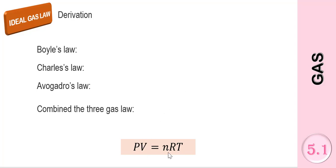The derivation of the ideal gas equation, which is PV equals nRT, actually comes from the combination of the three gas laws.